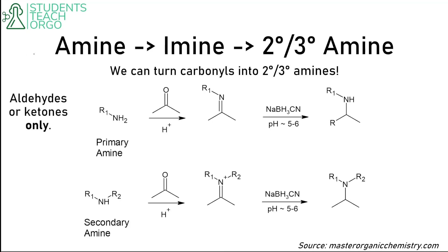So what is reductive amination? Essentially, we are turning an amine into an imine, and then into a secondary or tertiary amine. This basically lets us remove the double bond on our imine. It's quite useful for making tertiary and secondary amines.